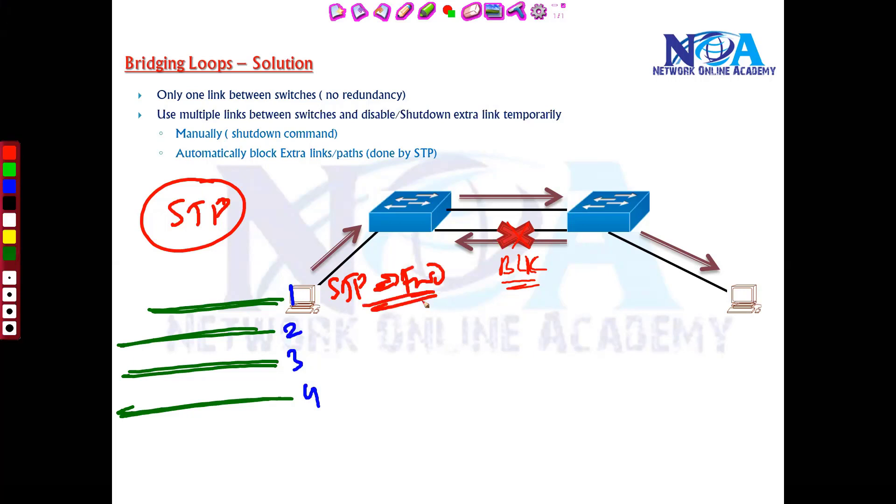So which means in my case, let's assume that this is the path which is forwarding. So probably it will calculate - we will see that calculation also. The best route will be in the forwarding, and the remaining paths it is going to temporarily put them into blocking state.